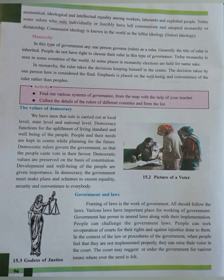The values of democracy: rule is carried out at local level, state level, and national level. Democracy functions for the upliftment of the living standard and well-being of the people, keeping people and their needs at the center while planning for the future. Democratic rulers govern so that people cast votes in their favor. Democratic values are preserved on the basis of the constitution, giving importance to development and well-being. The government must make plans and schemes to ensure equality, security, and convenience for everybody.